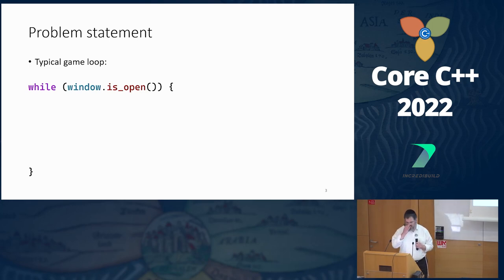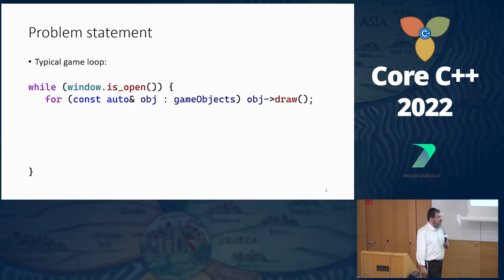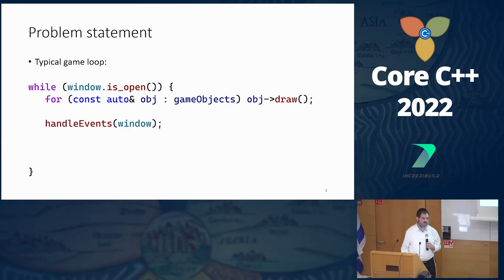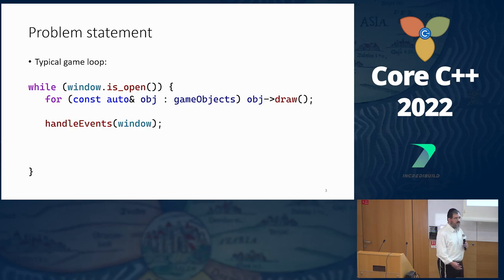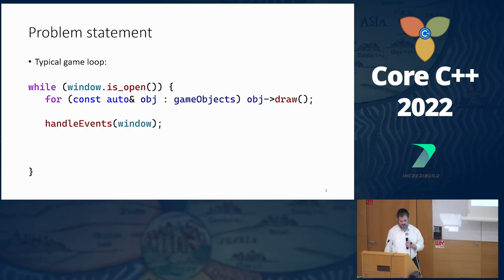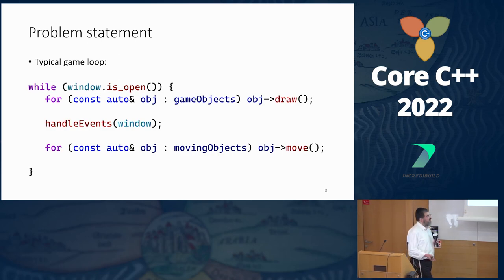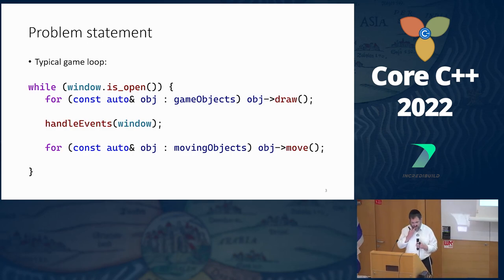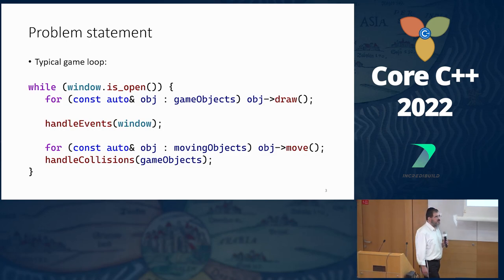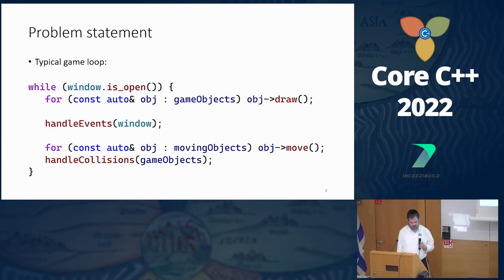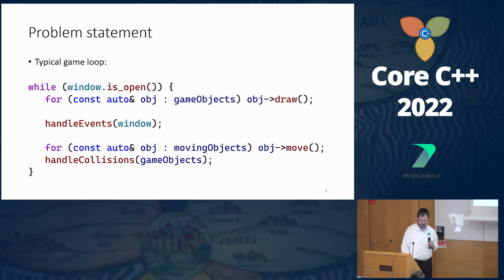A typical game loop is: while the window is open, we go over all the objects we have and draw them on the screen, then handle various events like keyboard events, mouse events, et cetera — all the input from the user mainly happens here. Then we go over all the moving objects and move each one. After things have moved, we have to handle collisions, because things might collide with each other. So let's zoom in into this handle-collisions function.